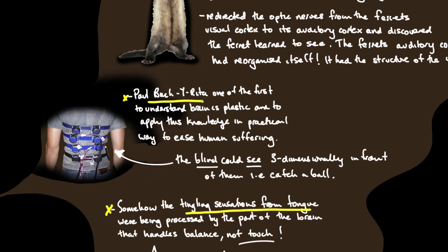Paul Bach-y-Rita was one of the first to understand how the brain is plastic and to apply this knowledge in a practical way to ease human suffering.